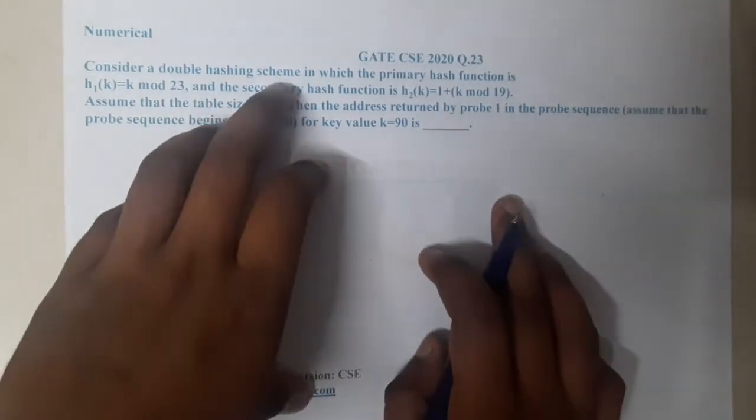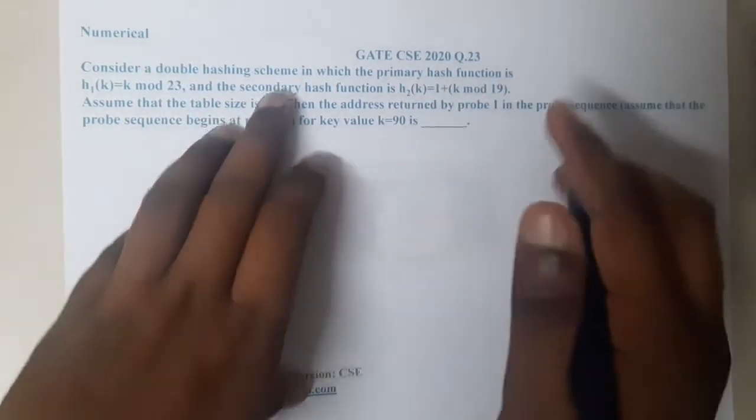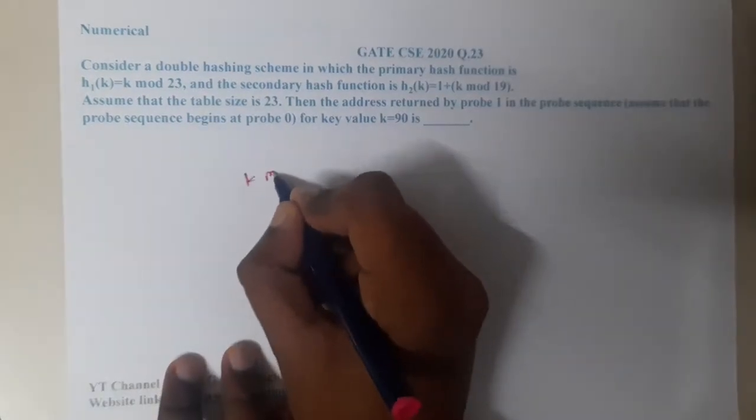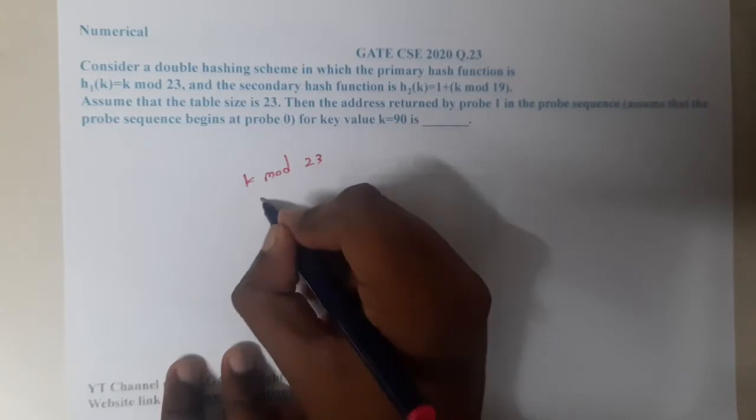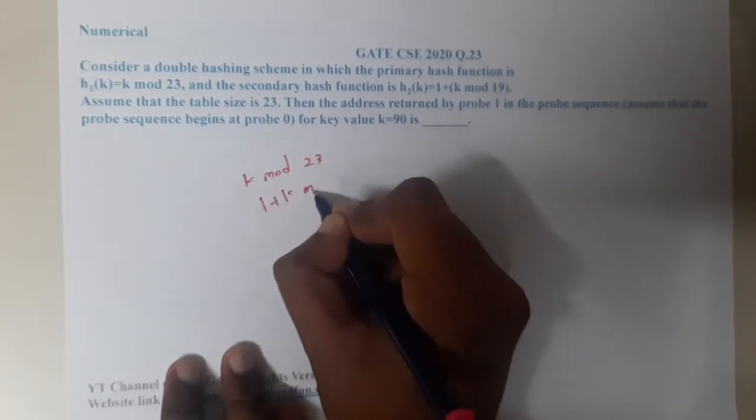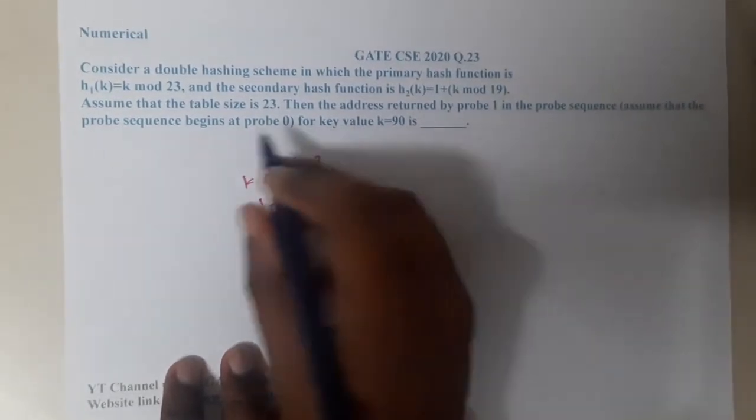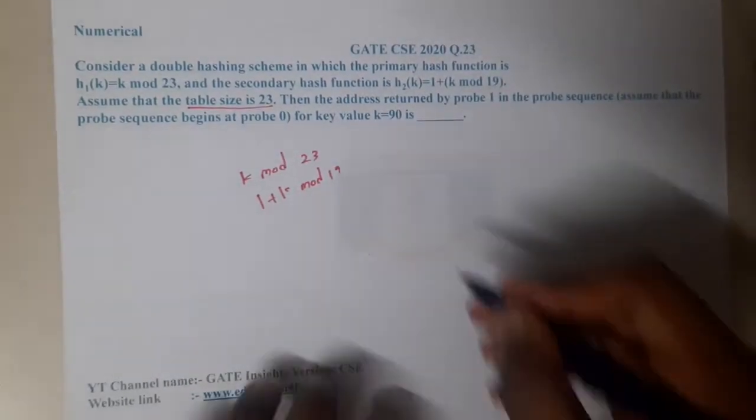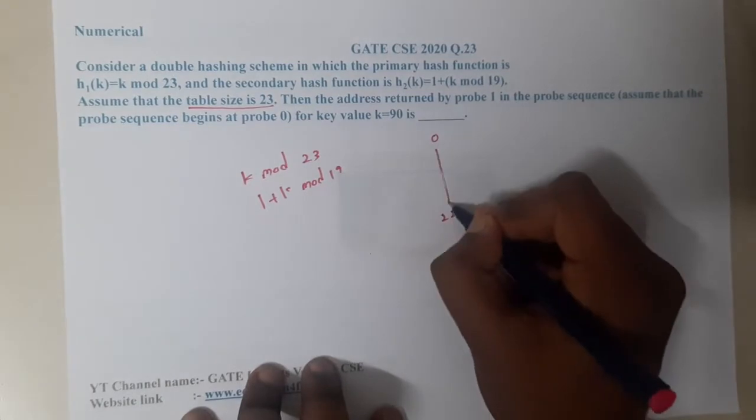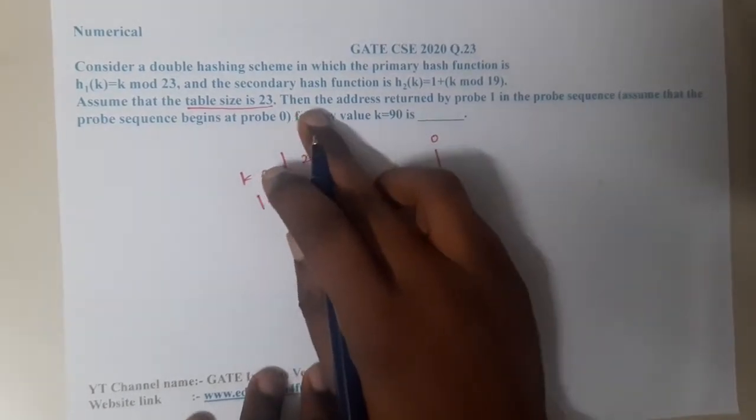We discussed this topic. The scheme in which the primary hash function is h₁(k) = k mod 23, and the secondary hash function is h₂(k) = 1 + k mod 19. There are total 23 slots in your hash table.